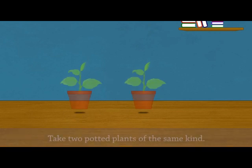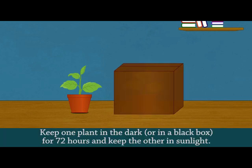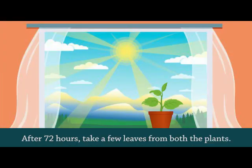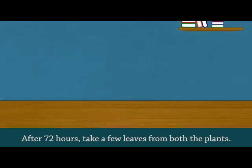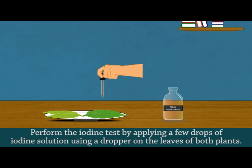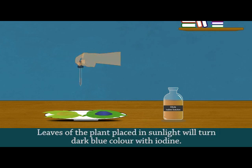Activity. Materials needed: a black box, iodine solution, dropper, water, and test tubes. Procedure: Take two potted plants of the same kind. Keep one plant in the dark for 72 hours and keep the other in sunlight. After 72 hours, take a few leaves from both plants and perform the iodine test by applying a few drops of iodine solution using a dropper on the leaves of both plants. Observe the color change in the leaves.